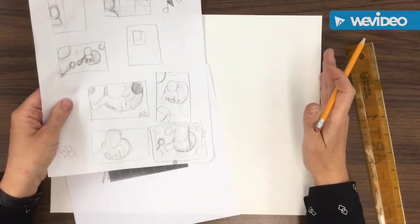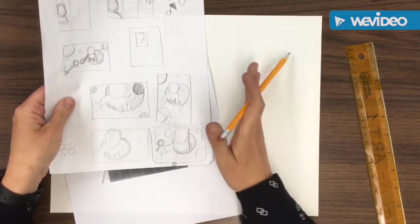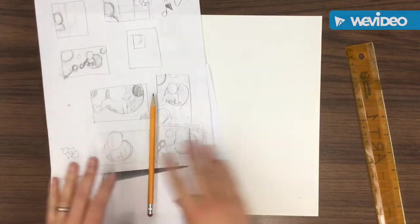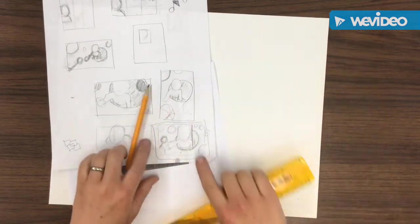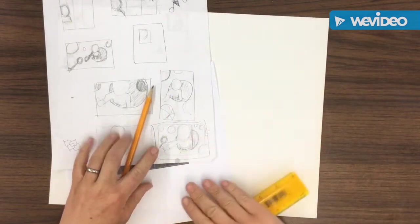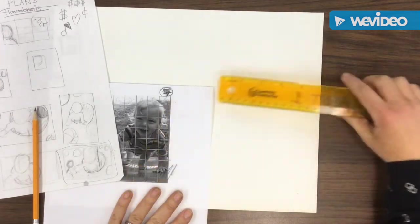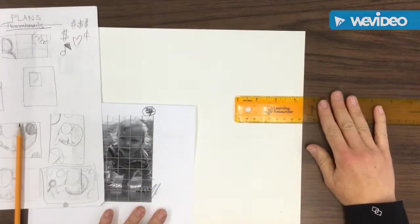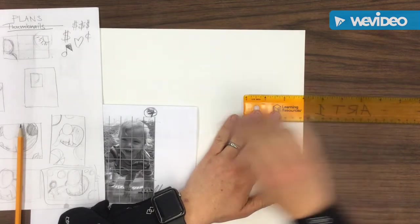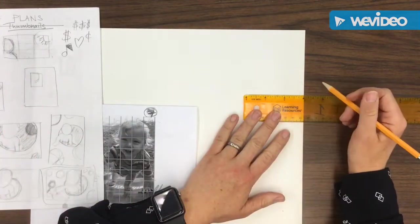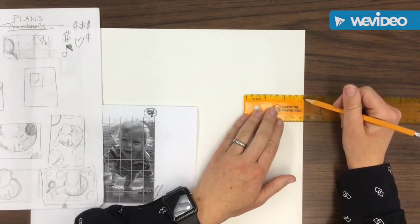So I don't necessarily want my person all the way over to the right, so I'm going to create a space here and then draw my grid from there. Based on my sketch, I want the person to start over inside the left side of the right side of the page. So I'm going to create a space with my ruler. I think three inches looks good, so I put three on the edge and mark it at zero and move it down.